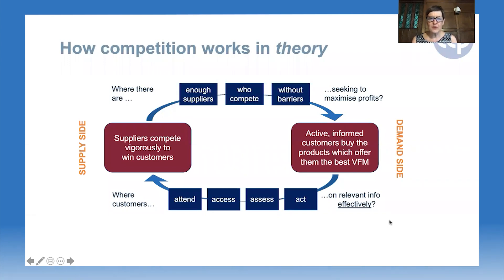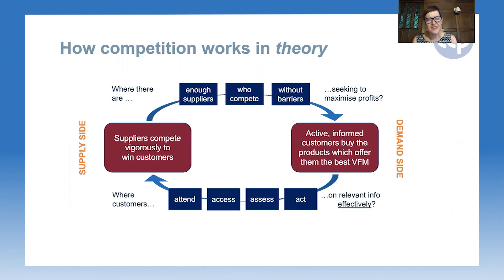The first thing I wanted to remind us of is how competition works in theory. It's essentially a kind of virtuous circle with suppliers on one side of the circle and consumers on the other side. In competition cases, we have a habit of focusing on the supply side — making sure we have enough suppliers, whether they compete effectively without barriers to entry. But competition will only work effectively and only deliver good outcomes if the demand side is also working well, if you have active informed customers buying the products which offer them the best value for money.